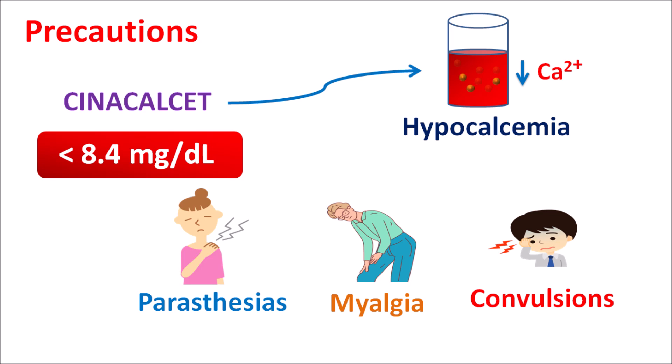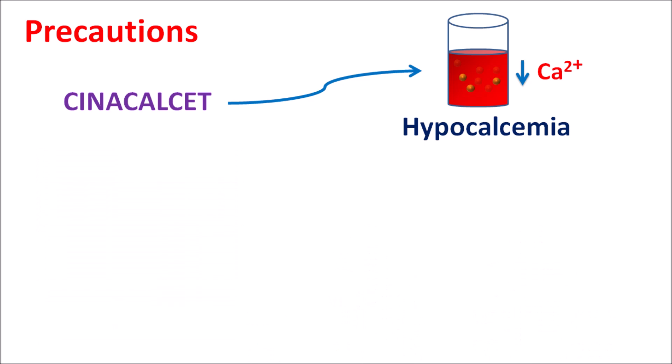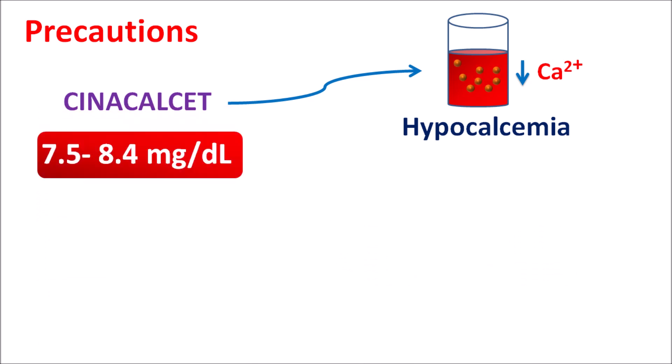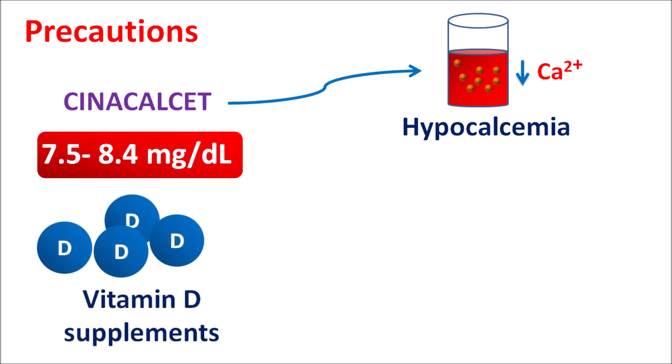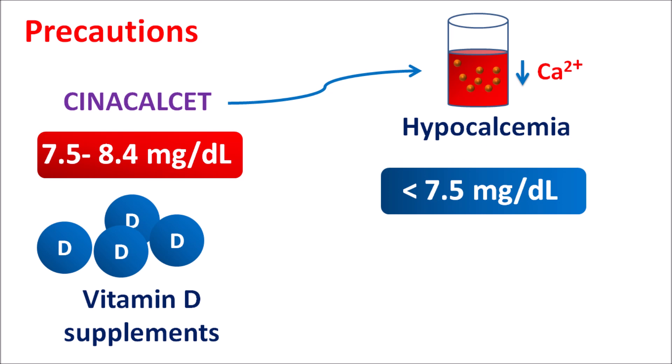Care should be taken when Cinacalcet is used. Sometimes calcium levels fall between 7.5 to 8.4 mg/dL, where symptoms like paresthesias, muscle pains, and muscle cramps may be observed. In such conditions, vitamin D supplementation should be given to restore calcium levels and reduce the risk of convulsions. Calcium levels should be regularly checked to prevent hypocalcemia and its complications. When calcium levels fall below 7.5 mg/dL — a fatal condition — the use of Cinacalcet is not recommended and should not be continued.